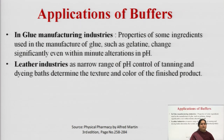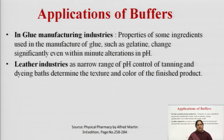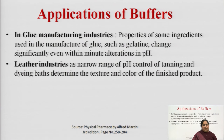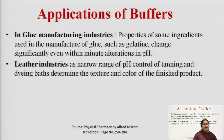In electroplating industries, some alloys can only be plated if a specific pH is maintained; if it is not controlled, electroplating of alloys cannot take place. In glue manufacturing, properties of some ingredients such as gelatin change significantly even with minute alterations in pH, so pH must be maintained for proper glue manufacture. In leather industries, a narrow pH control range is maintained for tanning and dyeing baths, which determines the texture and color of the finished product.